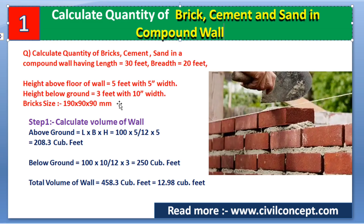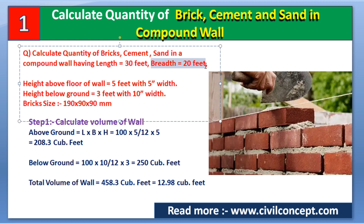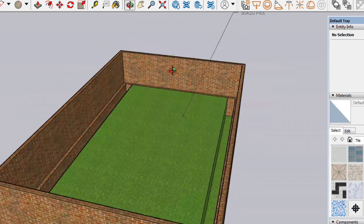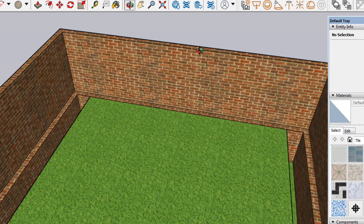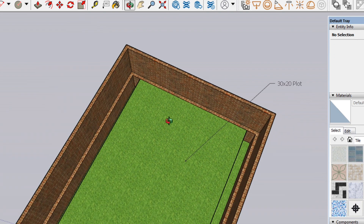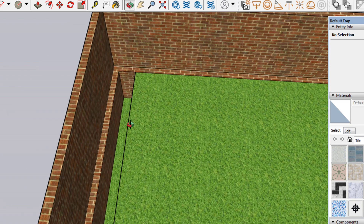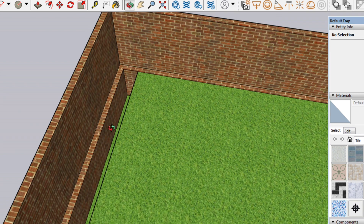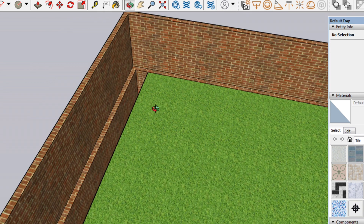First, the given information: calculate the quantity of bricks, cement, and sand in a compound wall having length 30 feet and width 20 feet. The height above the floor of the wall is 5 feet with 5 inch width. As you can see in this 3D model, the height above the floor is 5 feet and width is 5 inches. Below the ground, the width is 10 inches and the height is 3 feet.